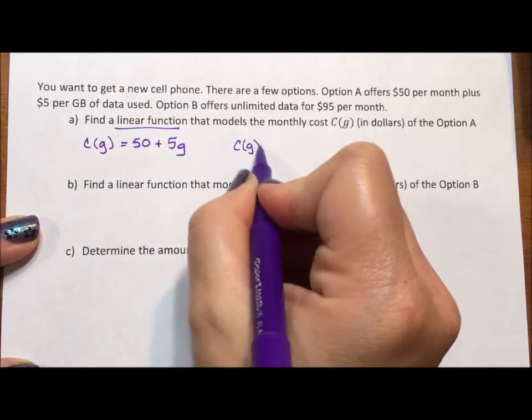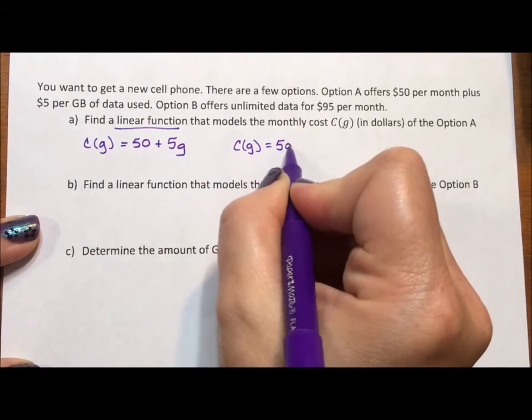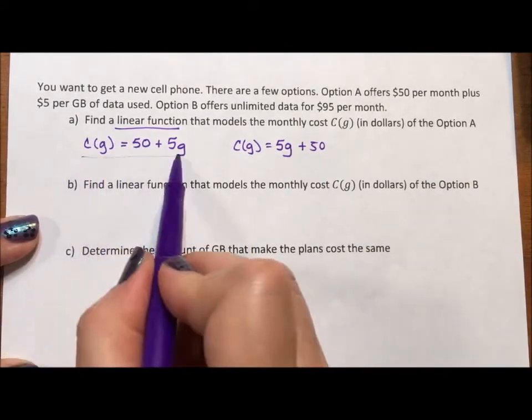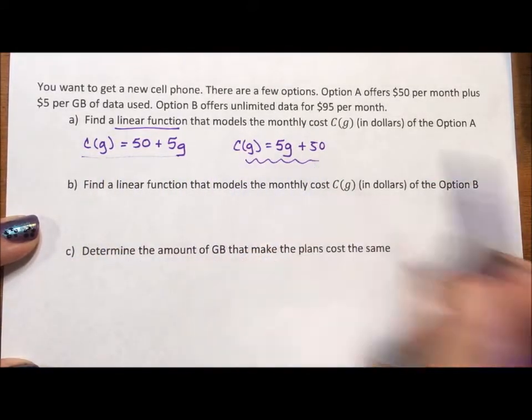Now you are more than welcome to keep this in y equals mx plus g and have 5g plus 50. It doesn't really matter. They're the same thing. This is a literal translation. This is a more conventional translation. It's addition. You can add in whatever order you want. They are both perfectly acceptable.